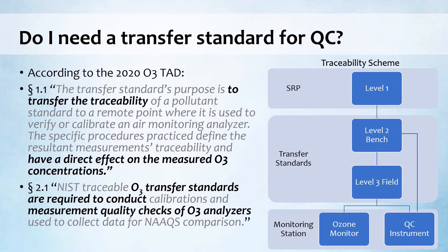So back to the question: do I need a transfer standard for QC? In the 2020 Ozone TAD Section 1.1, the purpose of a transfer standard is to transfer traceability, which will have a direct effect on the measured ozone concentration. Here's a simplified traceability scheme. Your transfer standard is verified against the Standard Reference Photometer, and then that traceability is transferred to the ozone monitor and to the QC instrument. If the QC instrument isn't used to adjust the ozone monitor, then one could assume it's the end of the line, much like an ozone analyzer, and could therefore be treated like an analyzer.